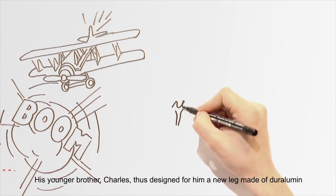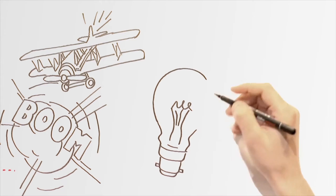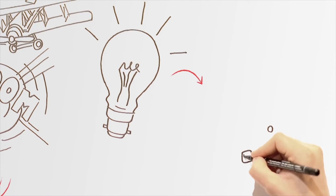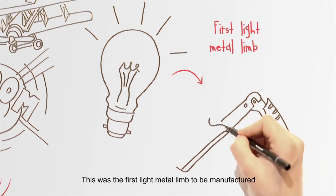His younger brother, Charles, thus designed for him a new leg made of duralumin. This was the first light metal limb to be manufactured.